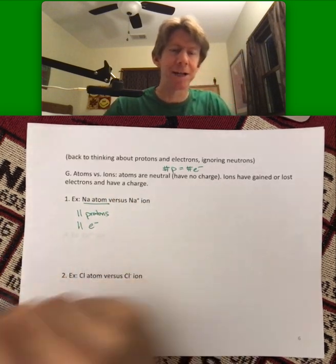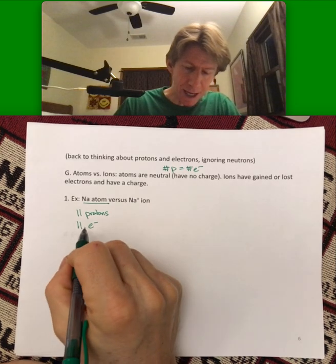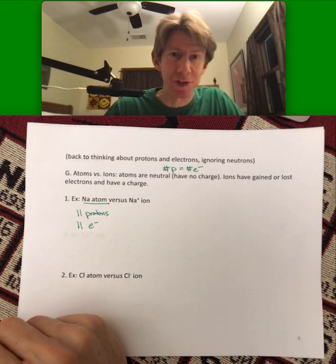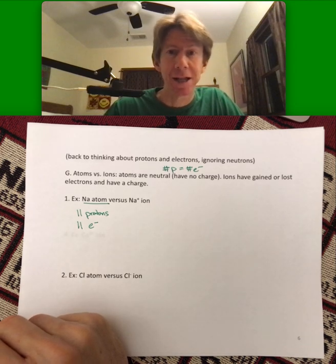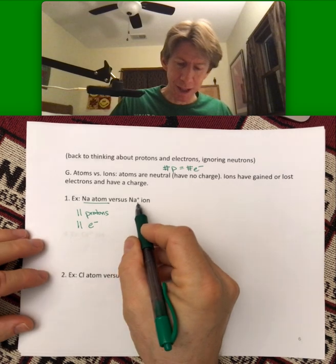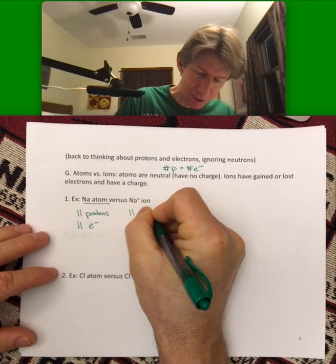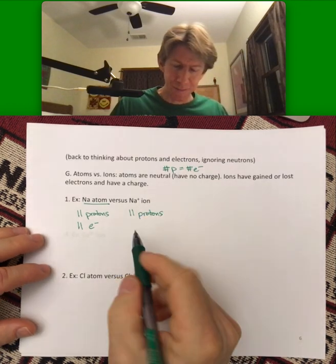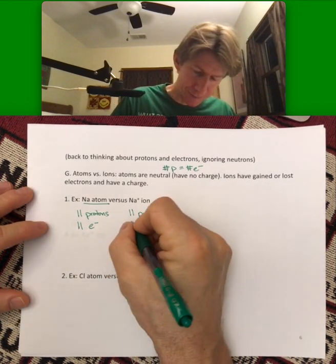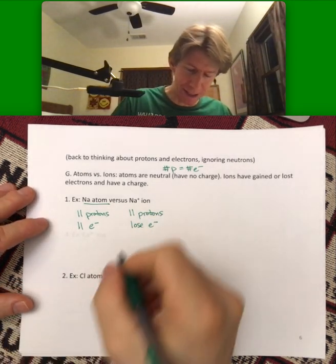It also has 11 electrons. And whenever I think about ions, I always think of the atom first, because electrons are tricky. Electrons are negative. So if you want a positive charge, and this is still sodium, so it still has 11 protons. But in order to get a positive charge, it has to lose an electron. And therefore, it only has 10 electrons.